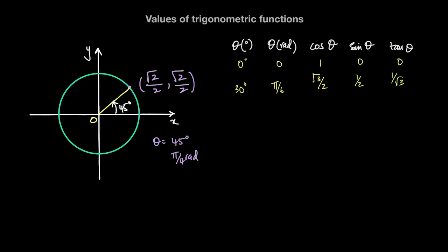When theta is 45 degrees, or pi over 4 radians, the cosine of theta is square root of 2 over 2, and the sine of theta is also square root of 2 over 2. Then the tan of theta is just the ratio between the sine and the cosine, which is equal to 1.